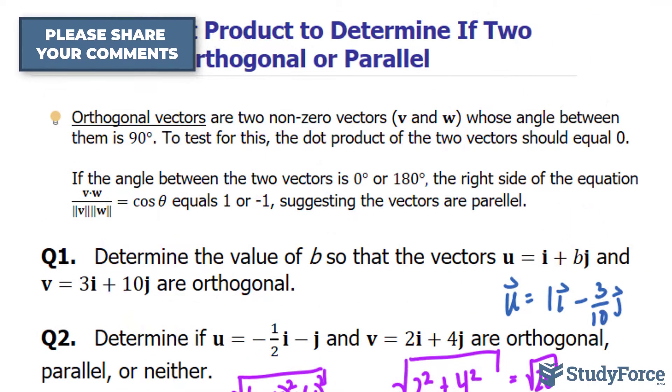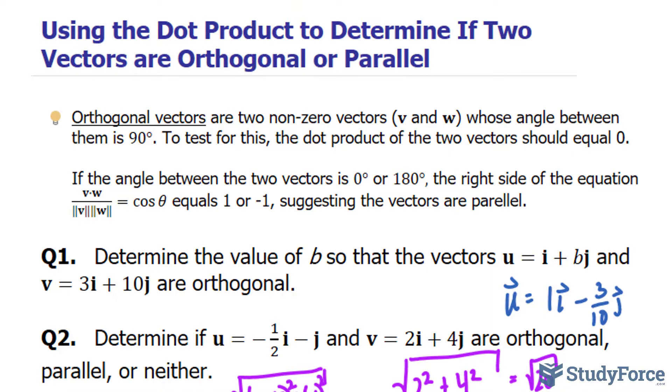And there you have it. That is how to use the dot product to determine if two vectors are orthogonal or parallel.